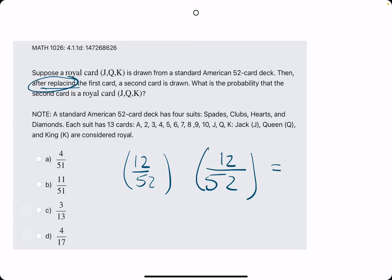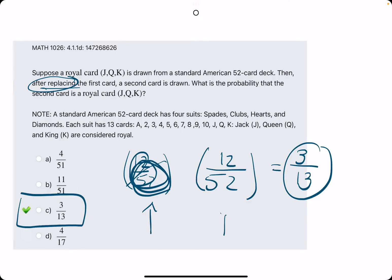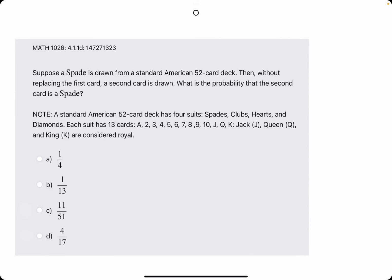So 12 over 52. And if we reduce this, we can divide both of these numbers by 4. So we get 3 over 13. So that is option C. Again, we don't need to consider the first probability, just the second card's probability. Alright, let's do a couple more.